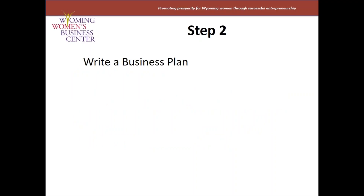If you've got your credit kind of in hand and know where you're at, the next step would be to write a business plan. There's an old adage that says if you fail to plan, then plan to fail — and that's kind of harsh. But a business plan is more like a road map. If you're going on a long trip, you want to check out the map to see where you're going and what routes you're going to take.